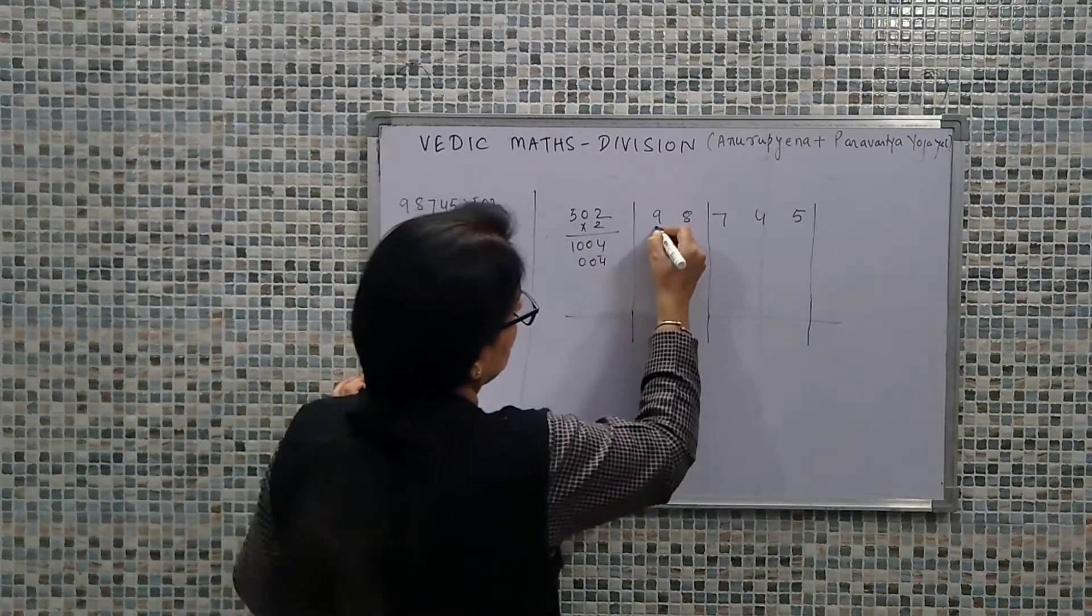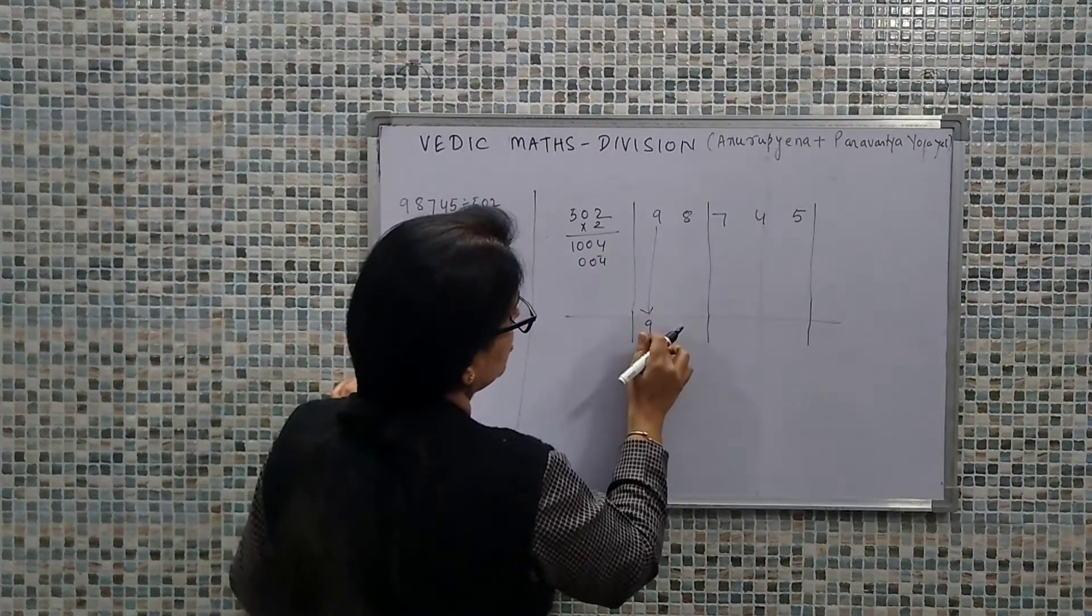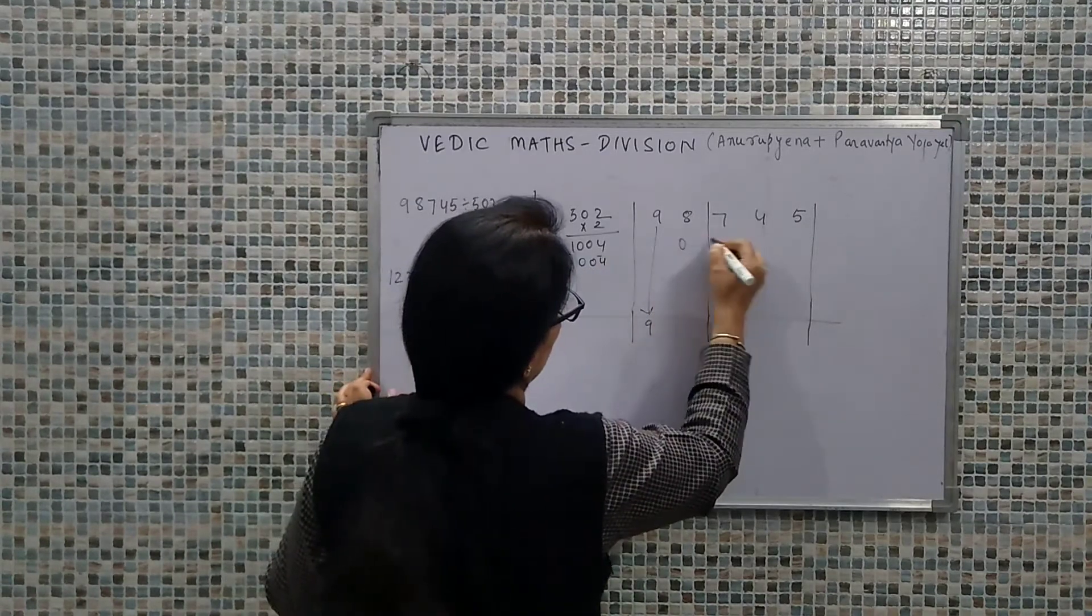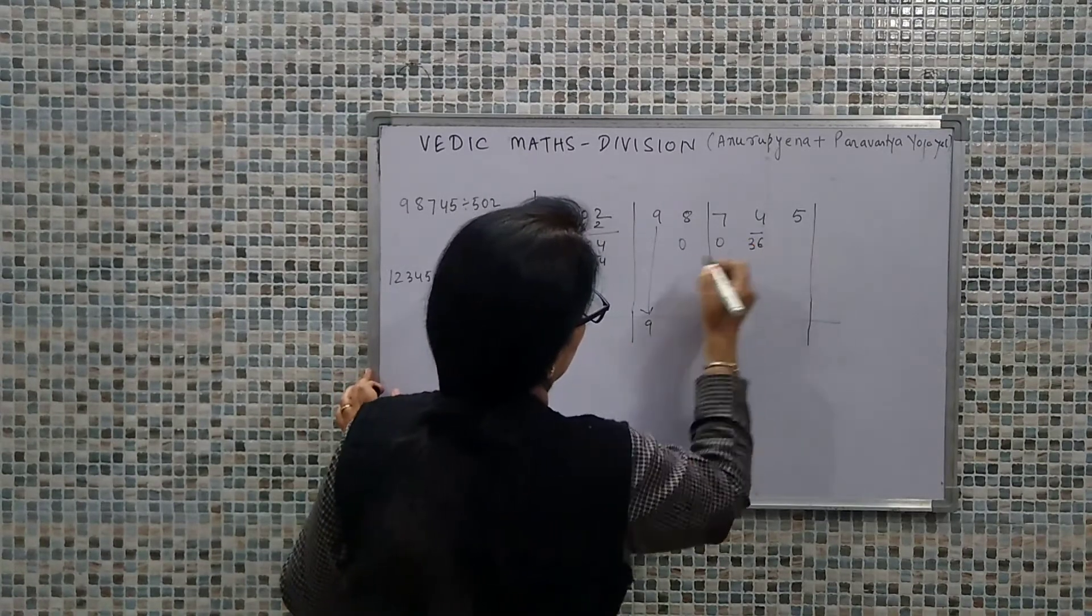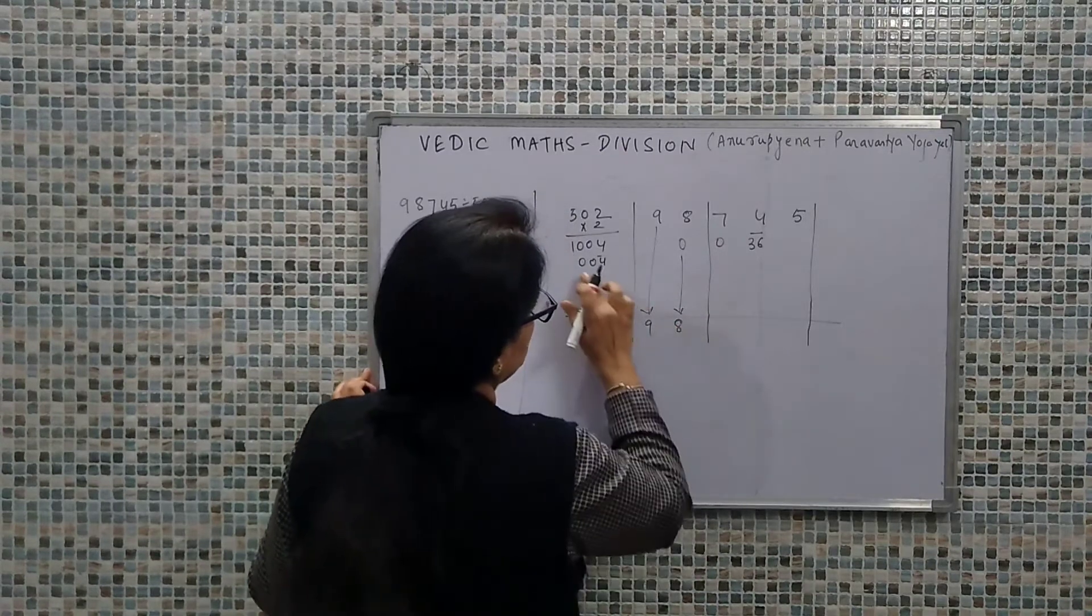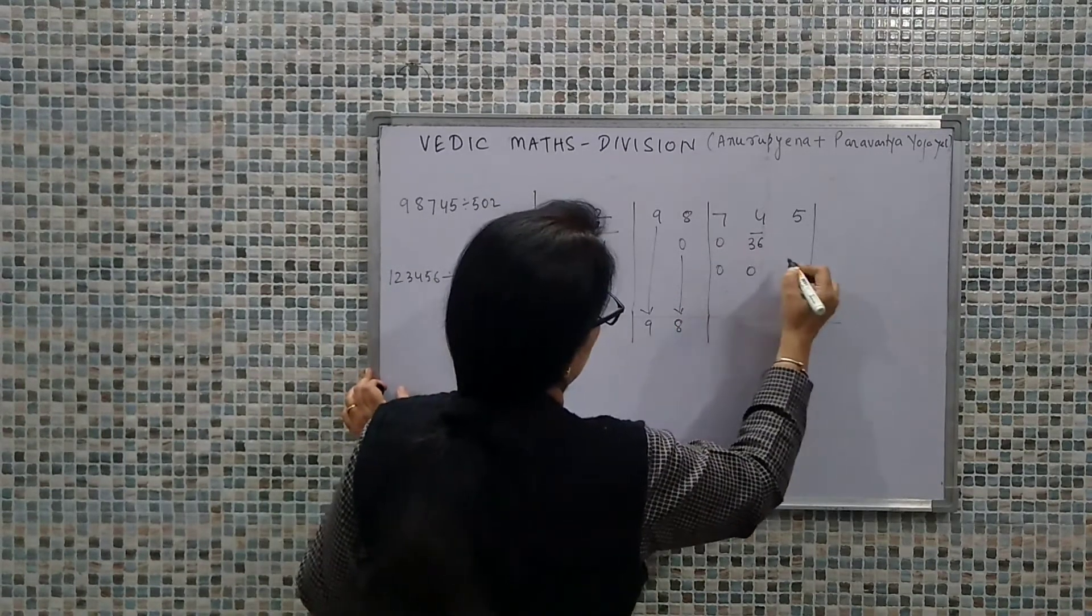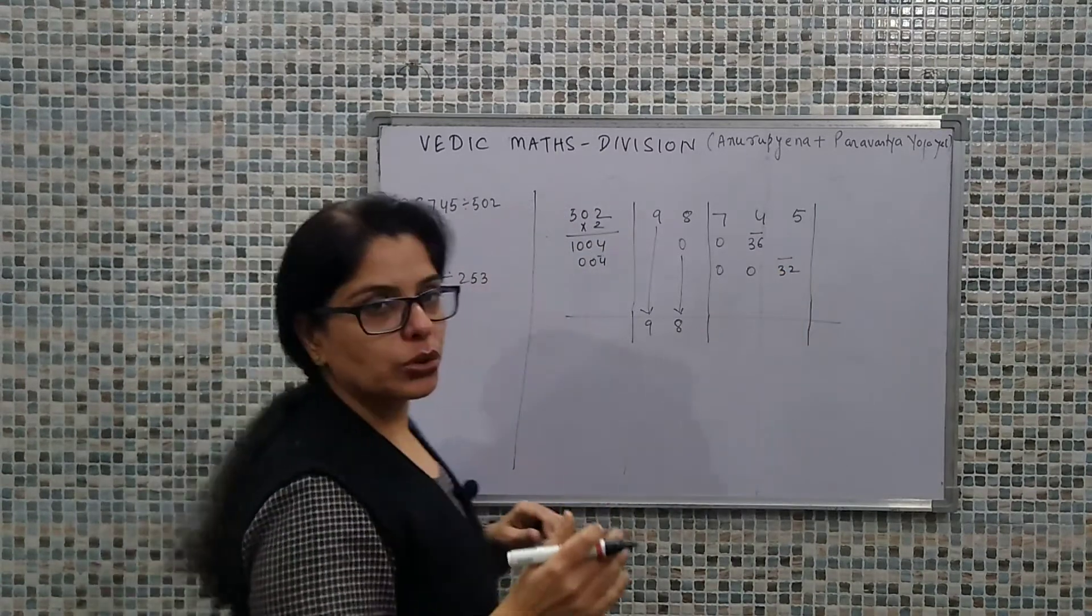First, 9 as it is will be copied. Multiply by 004, so we have 0, 0, 9×4 is 36. 8 plus 0 is 8. 8 will be multiplied by all the 3 values: 0, 0, 8×4 is 32. We have reached the last digit.